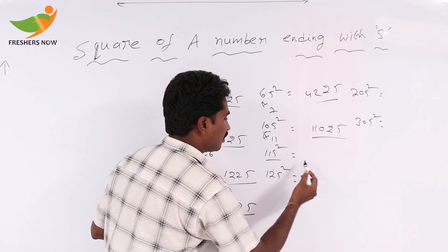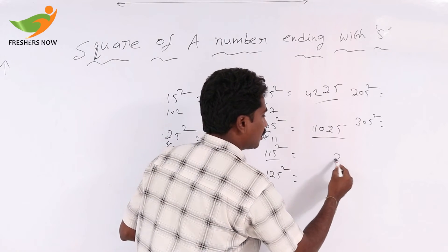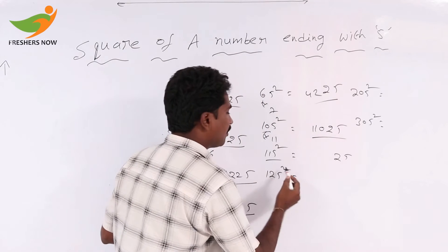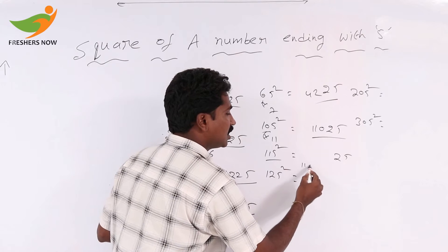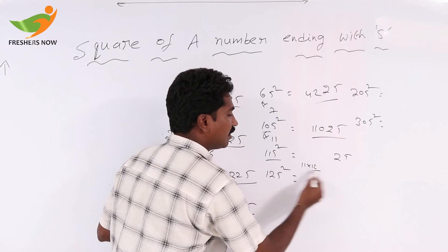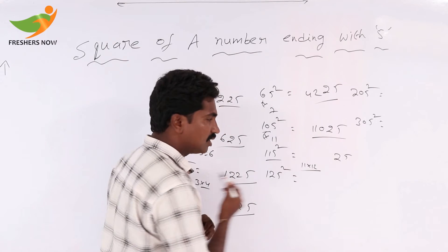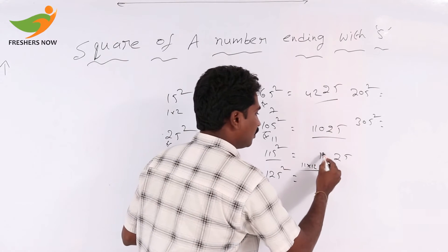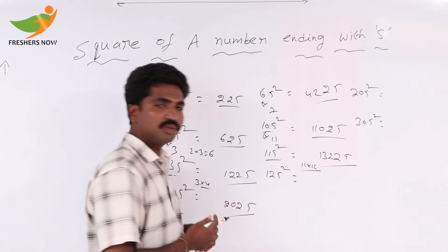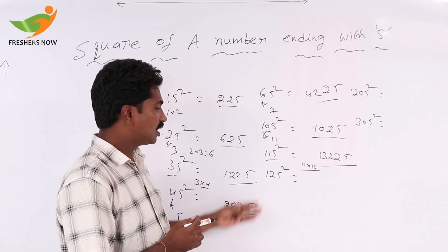For 115 square: 5 square equals 25. The remaining part is 11. The next number after 11 is 12, so 11 into 12 equals 132. So 115 squared equals 13225.